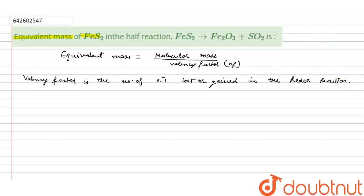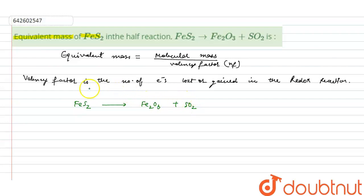First we will see the reaction: FeS₂ gives Fe₂O₃ plus SO₂. Now we have to calculate the equivalent mass of FeS₂. First we will see the structure of FeS₂.